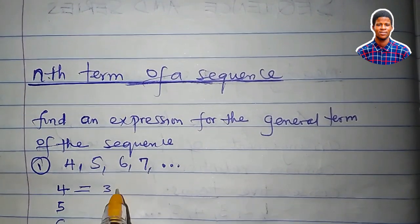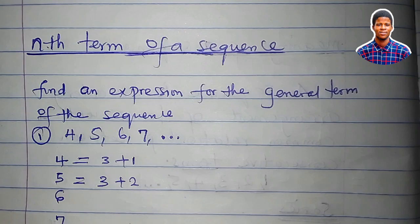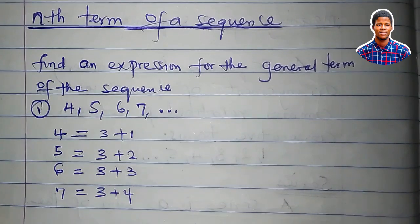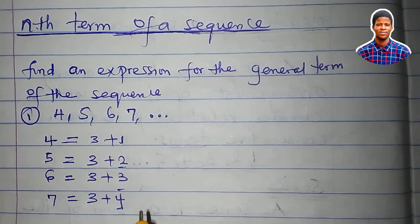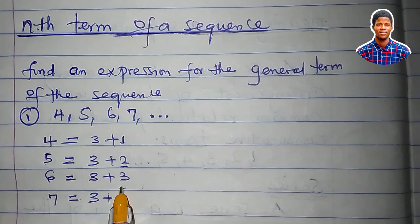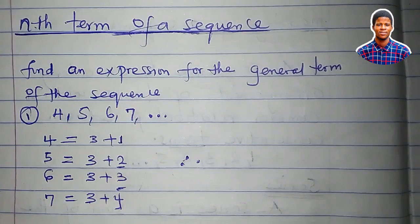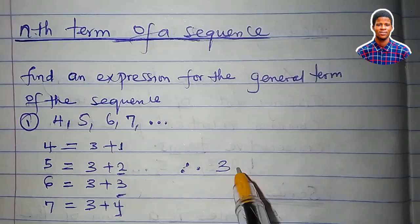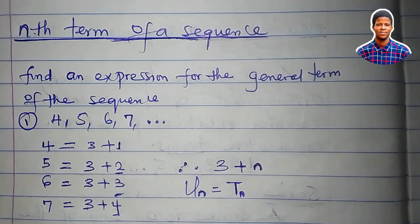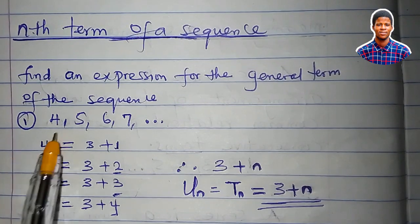Let us find an expression for the general term of this sequence. 4 is equal to 3 plus 1. 5 is equal to 3 plus 2. 6 is equal to 3 plus 3. 7 is equal to 3 plus 4. The position numbers 1, 2, 3, 4 represent n. The 3 is constant. So the general term, or the nth term, written as u sub n or t sub n, is equal to 3 plus n. This is the general term of this sequence.